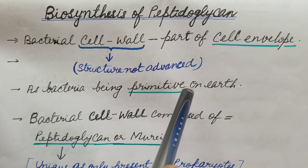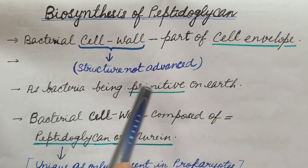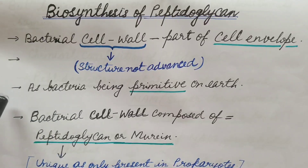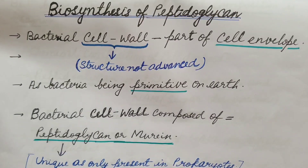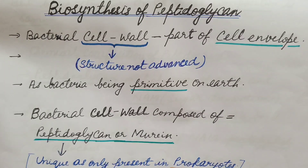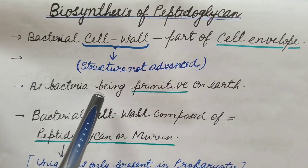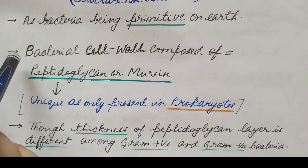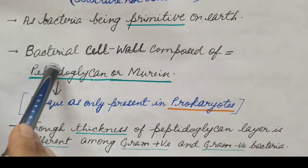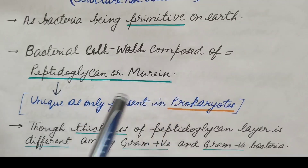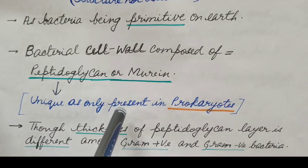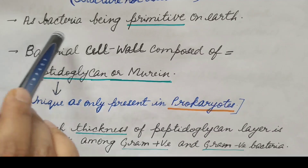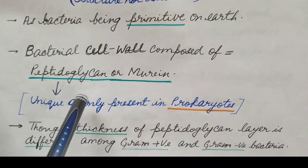The structure of the cell wall in bacteria is not as advanced as in eukaryotes like plants and fungi. The cell wall structure is primitive in bacteria because bacteria are primitive on earth, dating back to 3.5 billion years. Bacterial cell wall is composed of peptidoglycan, also known as murein, which is unique as it is only present in prokaryotes.